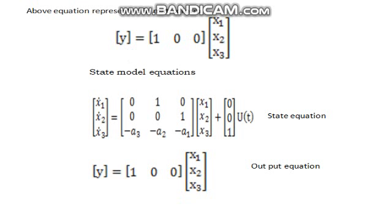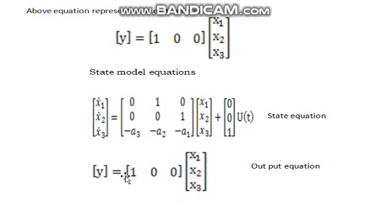The complete state model equation is: [x1_dot, x2_dot, x3_dot]ᵀ = [[0, 1, 0], [0, 0, 1], [−a3, −a2, −a1]] · [x1, x2, x3]ᵀ + [0, 0, 1]ᵀ · u(t) — this is the state equation. And y = [1, 0, 0] · [x1, x2, x3]ᵀ — this is the output equation. These two together form the complete state model, showing how to convert a transfer function to the state model using phase variables. Thank you.